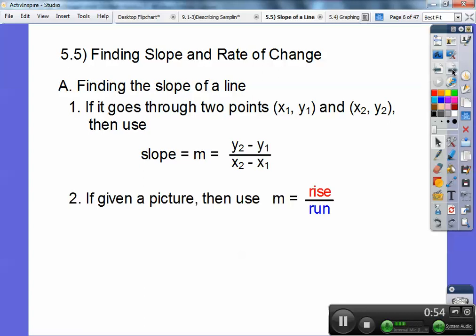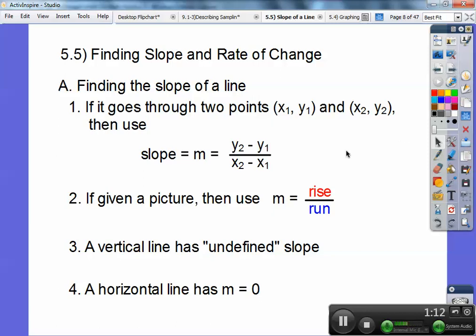If they give you a picture, then use rise over run. I'll show you an example in just a second. A vertical line has undefined slope—a line that goes up and down like this. A horizontal line has slope zero. When it's going like this, the slope would be zero.